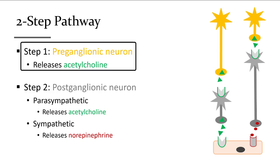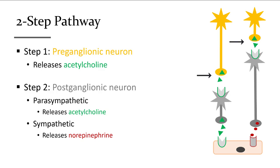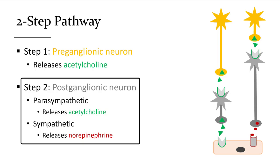The two-step pathway is a series of two neurons to get to an organ or tissue for the autonomic nervous system. The first neuron coming off the central nervous system is the pre-ganglionic neuron, and it will always release acetylcholine. For the autonomic nervous system, the second neuron that ultimately goes to the organ or tissue will release acetylcholine if it's from a parasympathetic neuron — cranial or sacral — or it will release norepinephrine if coming from a sympathetic neuron from the thoracic or lumbar nerves.